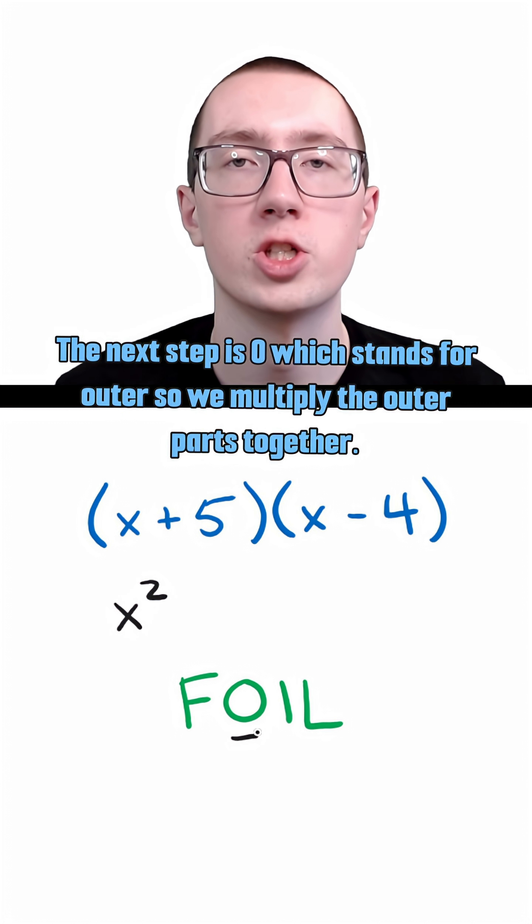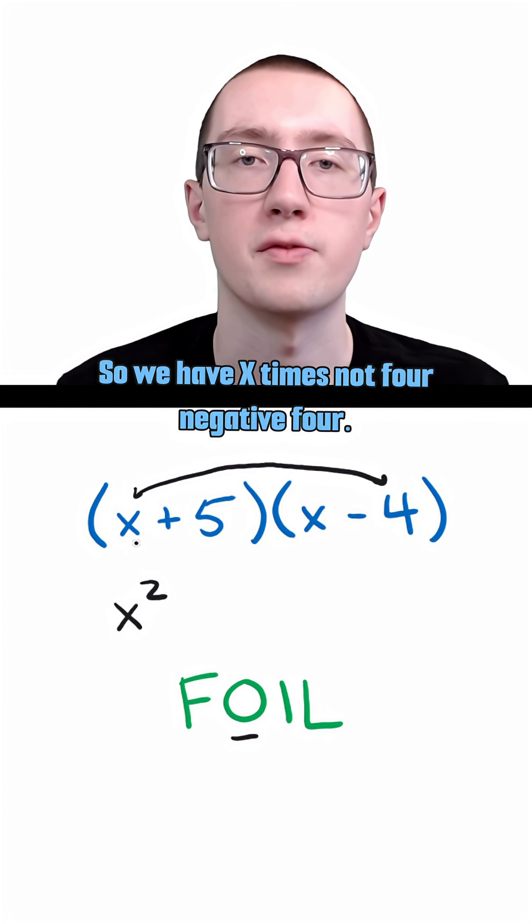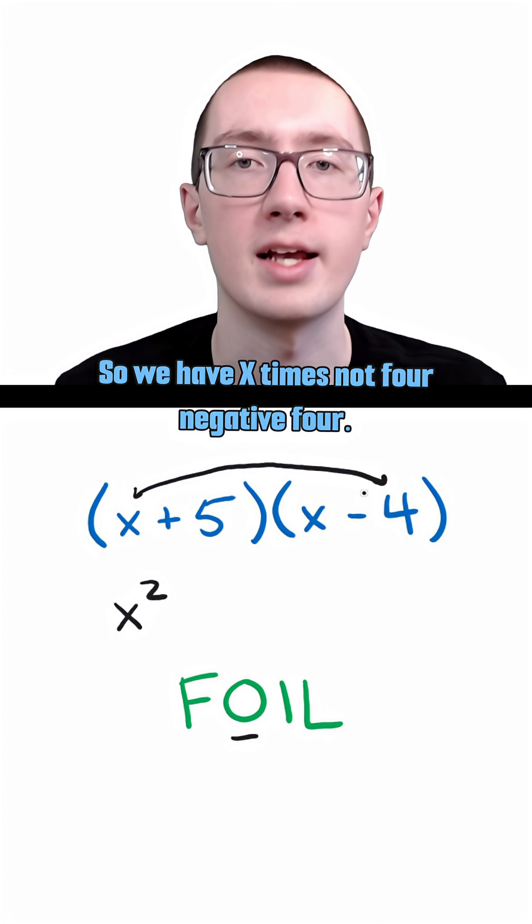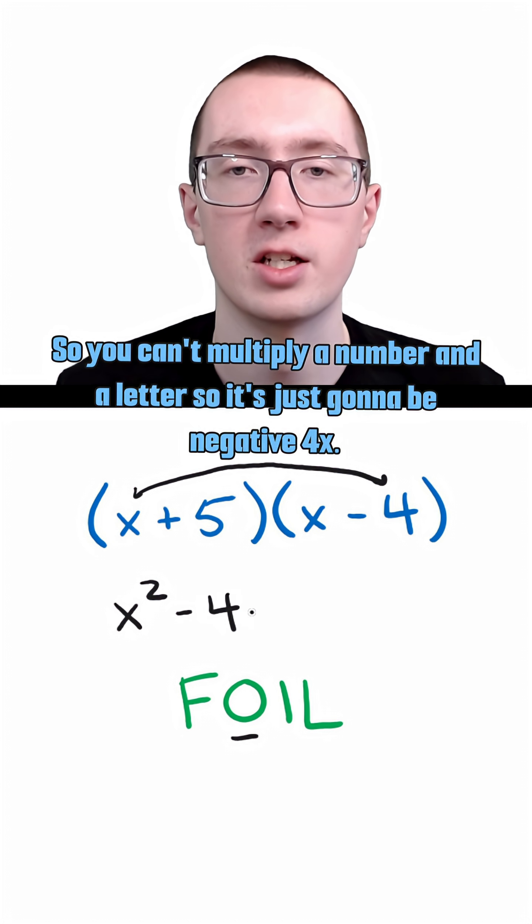The next step is O, which stands for outer. So we multiply the outer parts together. So we have x times negative four. You can't multiply a number and a letter, so it's just going to be negative four x.